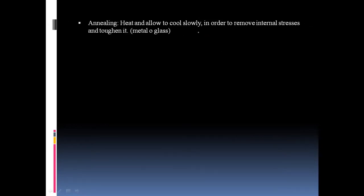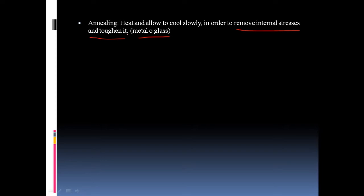Annealing means heating and allowing to cool slowly. If it is a metal or glass, we heat it to a high temperature and then slowly cool it down. That metal or glass is heated to a high temperature and slowly made to cool, which avoids or removes the internal stress and increases the toughness of that particular metal or glass. Annealing is the process of heating a metal and cooling it slowly, used to remove internal stress and increase toughness. For this heating process we use electrical energy, which is why it is an application of electrical energy in industry.